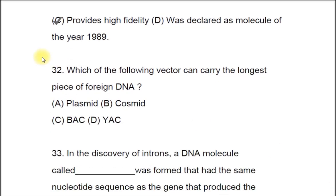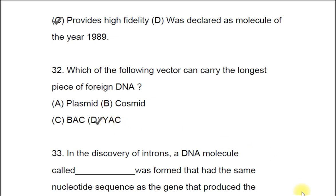Question 32: Which of the following vectors can carry the longest piece of foreign DNA? Options are plasmid, cosmid, BAC, YAC. The correct answer is YAC, which stands for Yeast Artificial Chromosome.